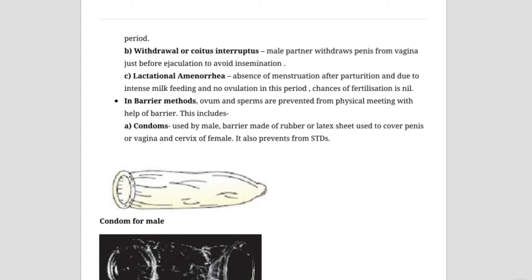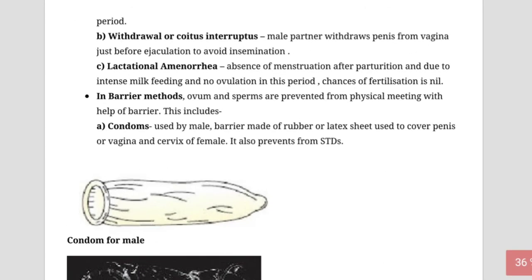Another natural method is coitus interruptus — withdrawing the penis from the vagina just before ejaculation of sperm. However, these methods are not always preferred because such conditions can't always be maintained, and sometimes they fail.